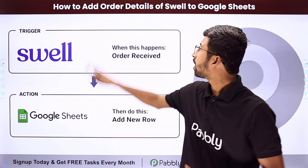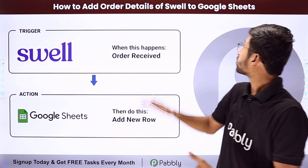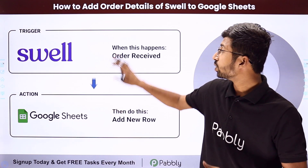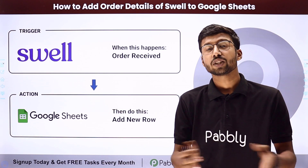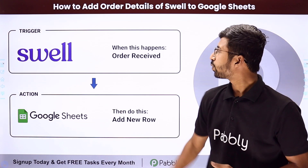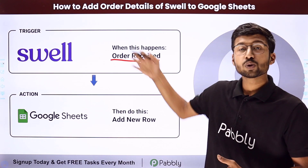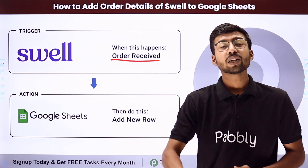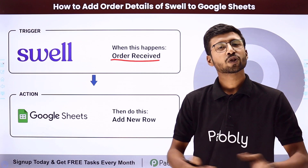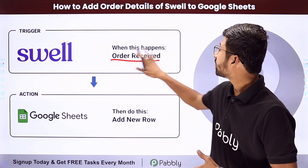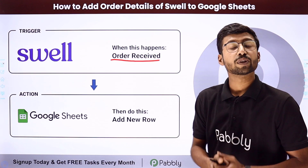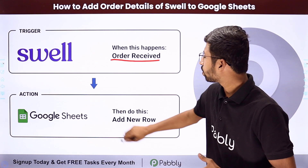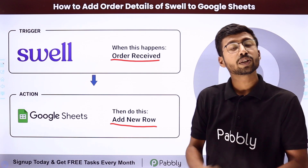In this video, we are going to learn how to add order details of Swell to Google Sheet. Suppose you have created your e-commerce store using Swell and you are selling some products online. Whenever you receive a new order on your Swell store, you want to add those order details into a Google Sheet. You can completely automate this process. The trigger of this automation will be receiving a new order on your Swell store, and the action will be the addition of those new order details as a new row into our Google Sheet.